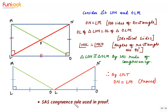Let's summarize what we have learned through this proof. We have seen how the SAS rule is used in geometrical proofs, and we have proved that the diagonals of a rectangle are equal.